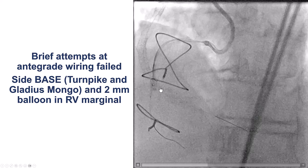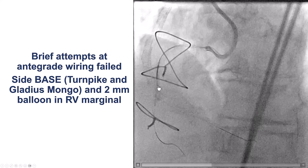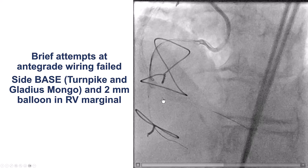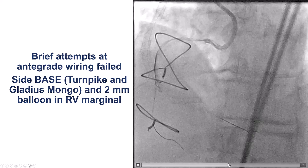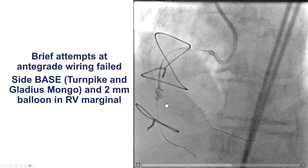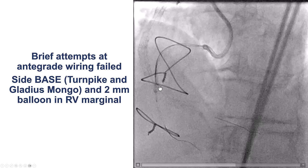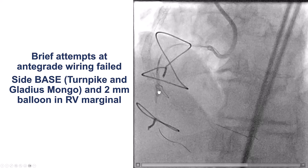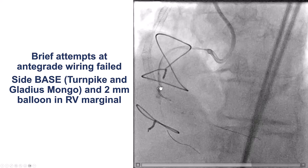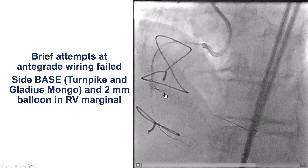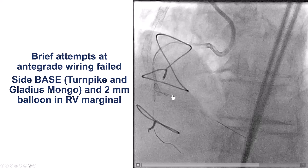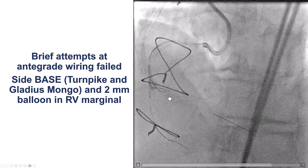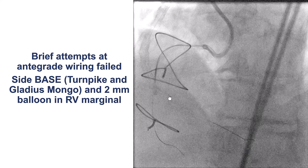This is a Gladius Mongo wire, and the Gladius Mongo could then be redirected to follow the course of the distal RCA. Before doing the side-branch balloon, the wires just kept going inside the marginal branch, but now we have formation of a nice knuckle going along the course of the distal right coronary artery.